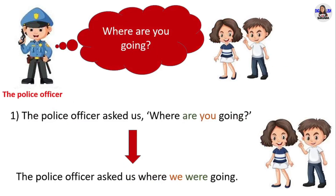First example: 'Where are you going?' The police officer asked us, 'Where are you going?' In direct speech. In reported speech, the police officer asked us where we were going. 'Where are you going?' is a WH question. When we report WH questions, we must change it into statement form. So 'where are you going?' changes into 'where we were going.' Simple present changes into past simple. Pronoun 'you' changes into pronoun 'we.' Question mark changes into a full stop.